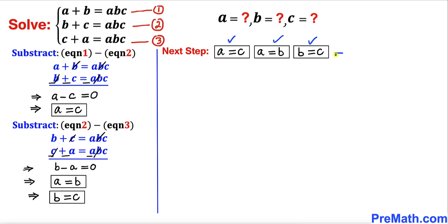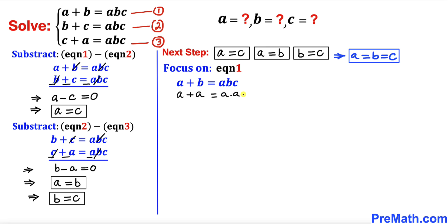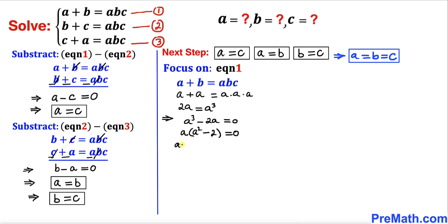So we have established that a equals b equals c. Now let's focus on equation one and replace b and c each with a. The equation becomes a plus a equals a times a times a, giving us 2a equals a cubed. Rearranging, a cubed minus 2a equals zero. Factoring out a, we get a times (a squared minus 2) equals zero.